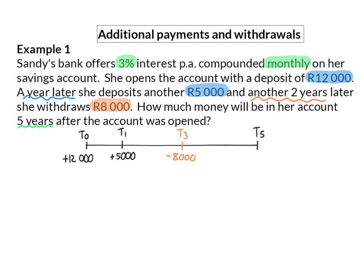The question is how much money will be in her account 5 years after the account was opened. Because each of these three amounts receives the same percentage interest, we can see them as three different accounts. That means we can determine the value of each of these amounts separately at year 5. Because we are moving forward on our timeline, we are going to use a positive exponent in our calculations for the interest.